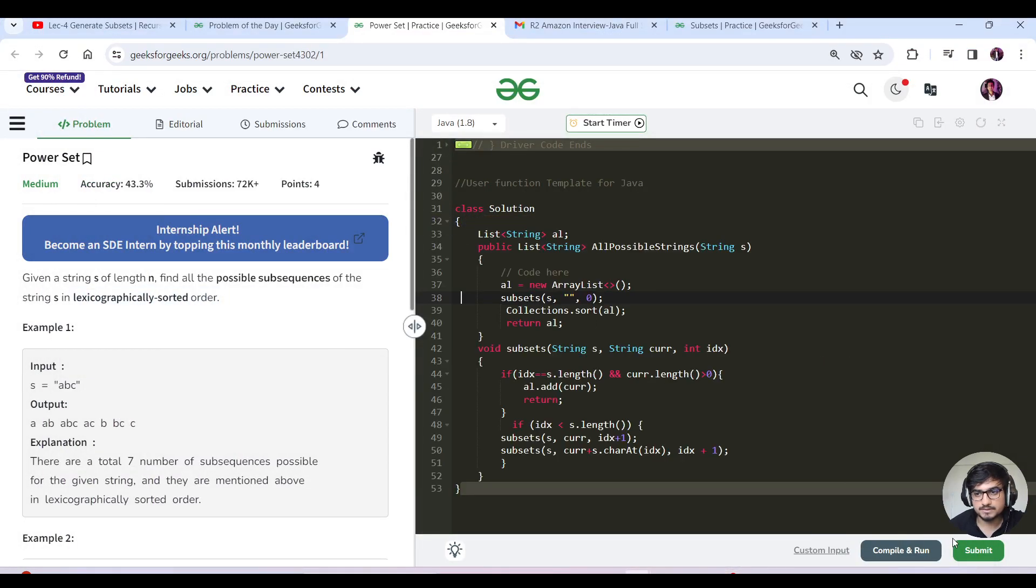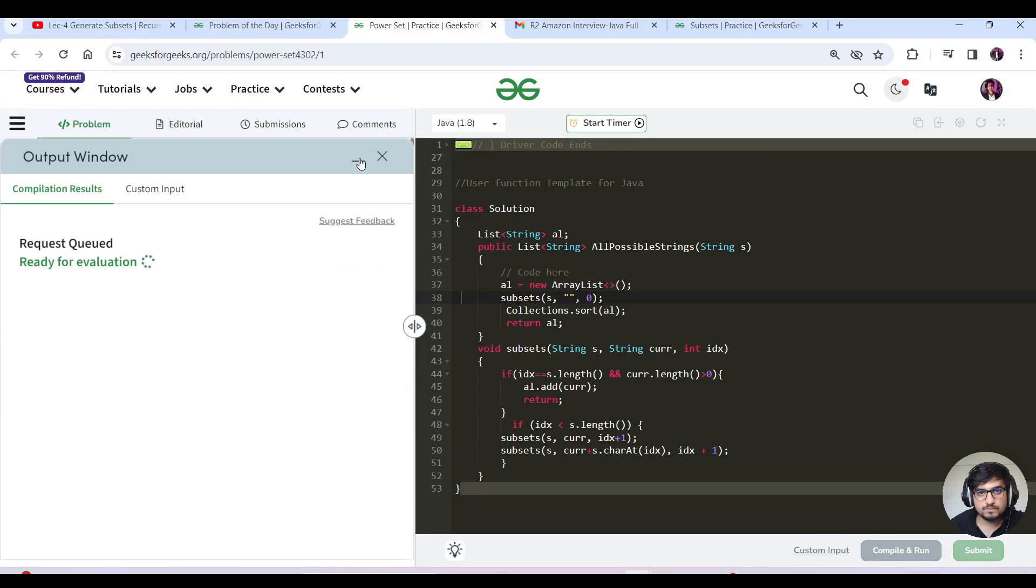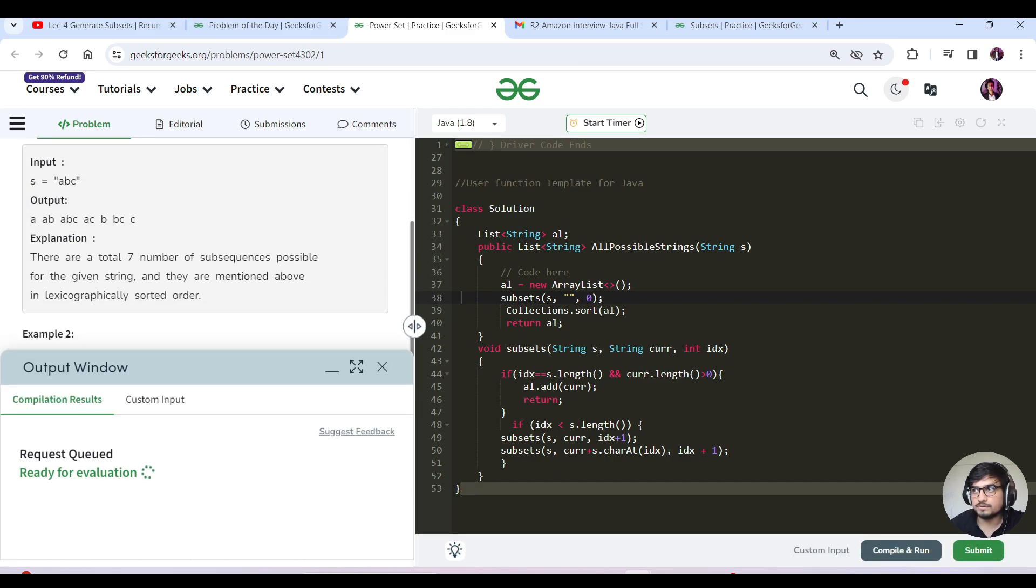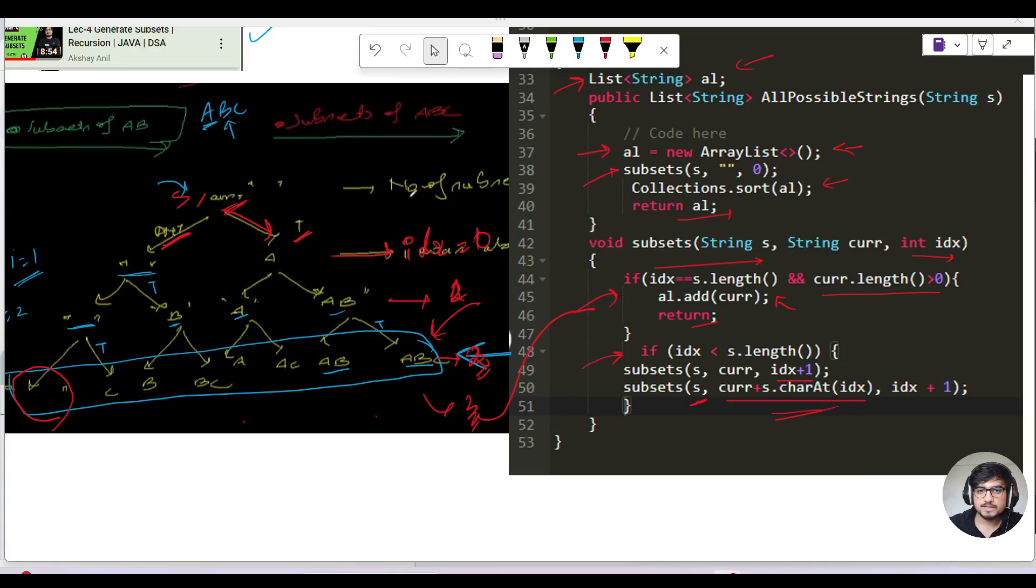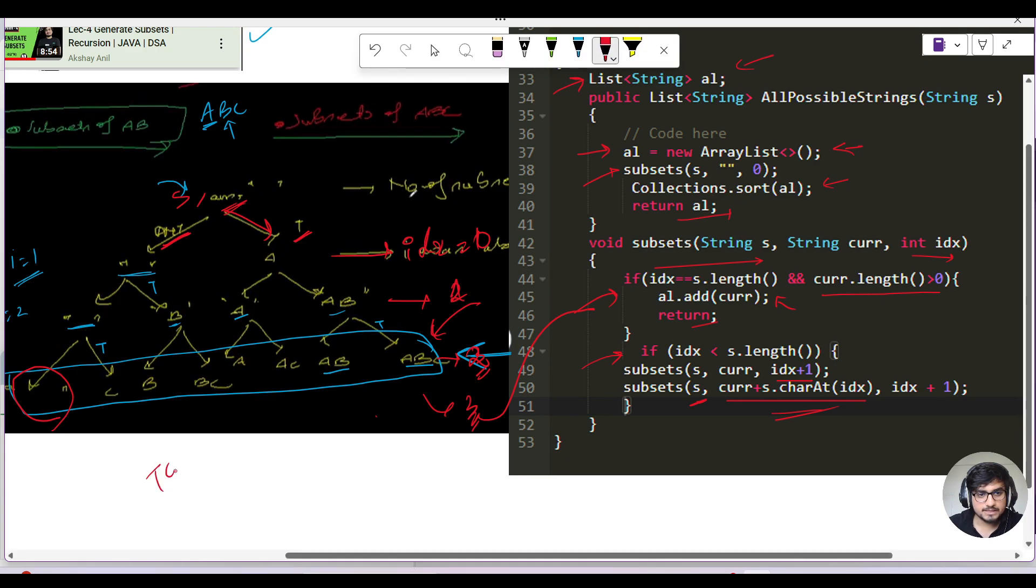Let's quickly discuss the time and space complexity. For each and every character we are making two calls, so time complexity is 2^n for the recursion. But we're also sorting it. The total subsets formed is 2^n, and to sort a string is n log n, so it's 2^n log(2^n).